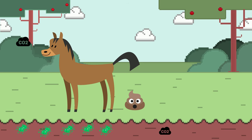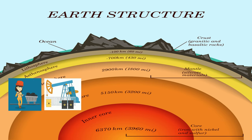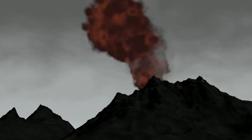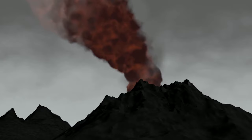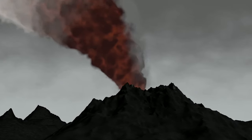Carbon is also stored in the Earth's interior. Carbon in the lithosphere includes fossil fuels like coal, oil, and natural gas, along with deposits like limestone. Volcanoes may release some of this carbon stored in the lithosphere when they erupt.